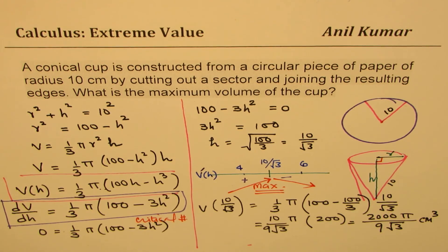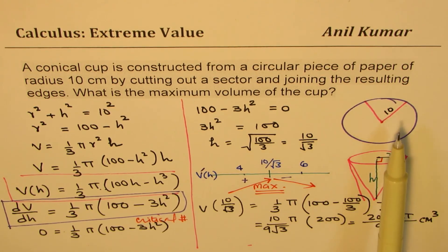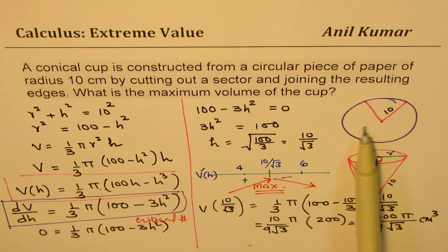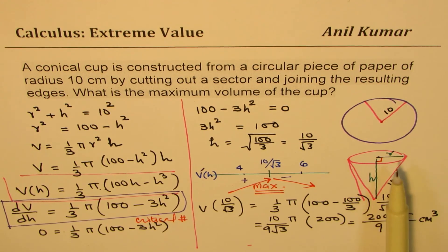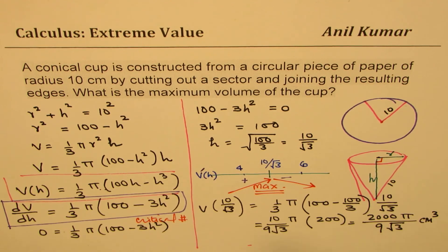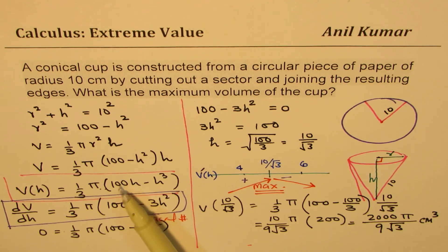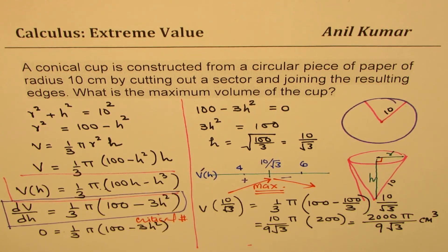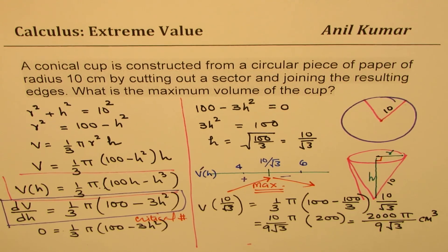The critical step here is to understand how the circular piece can be converted to a cone, and how to relate R and H to express volume in one variable — we expressed it in H. Then we find the first derivative, analyze it for maximum, and get the result. The maximum volume of the conical cup is 2000π/(9√3) cubic centimeters.